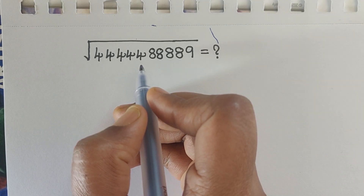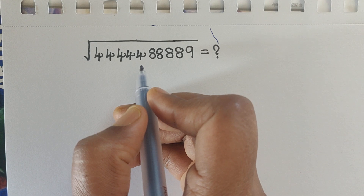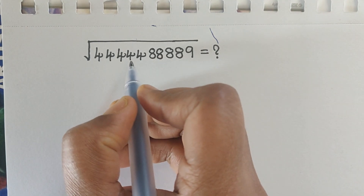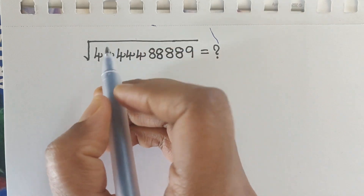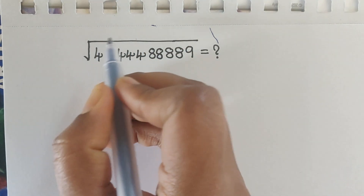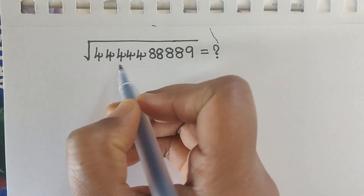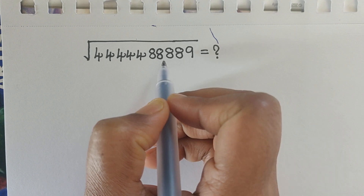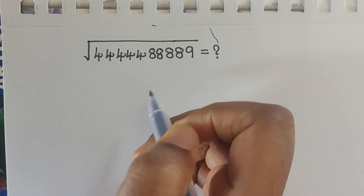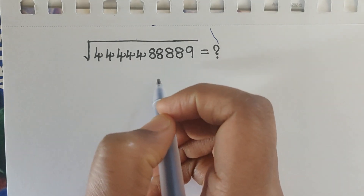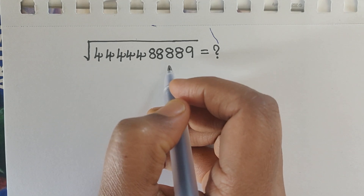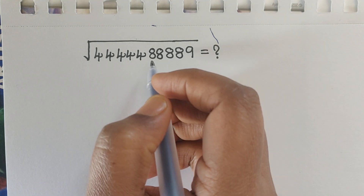Hello everyone, how are you all? I hope you all are fine. See here, we have one question: the square root of 5 fourths, 4 eighths, 9. So how do we solve this problem without using a calculator? Let me know your clue.